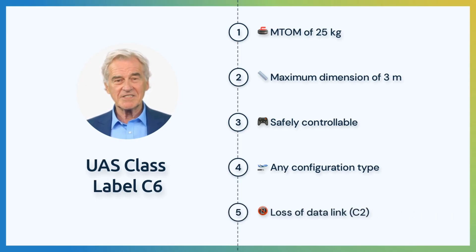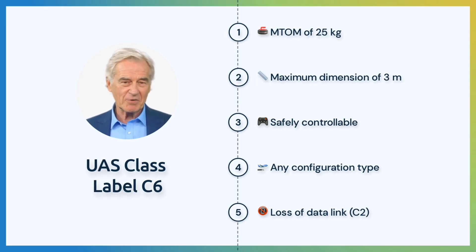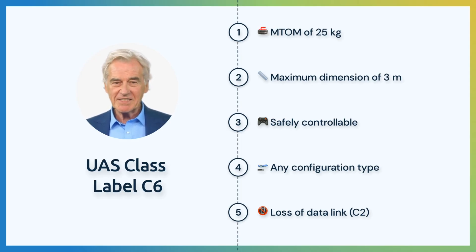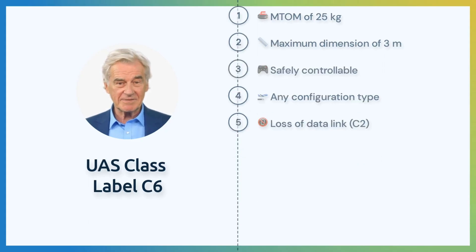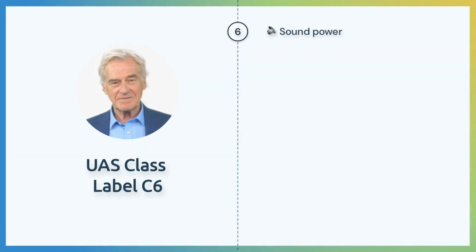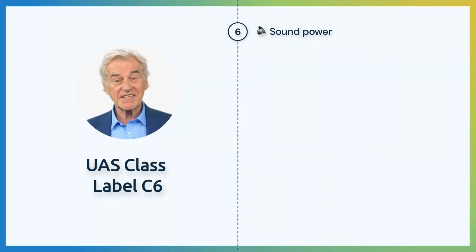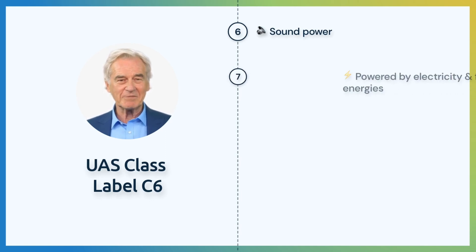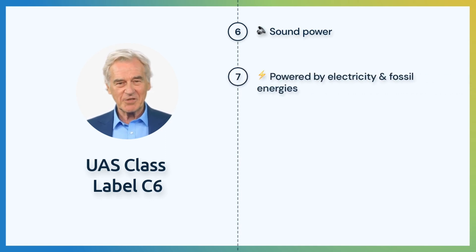In case of a loss of a data link, the UA shall recover the data link or terminate the flight in order to reduce risk to air and ground third parties. It is not allowed for the UA to exceed sound levels detailed in Part 13. The UA can be powered by electricity and fossil energies.